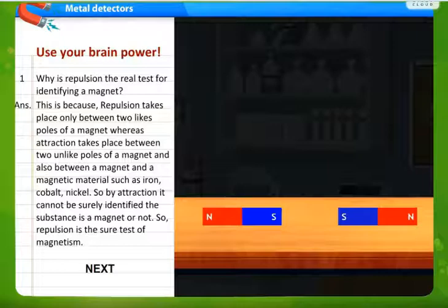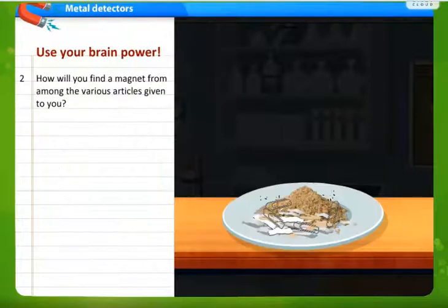Magnetic materials are those materials which are attracted towards a magnet. So by attraction, it cannot be surely identified the substance is a magnet or not. So repulsion is the sure test.